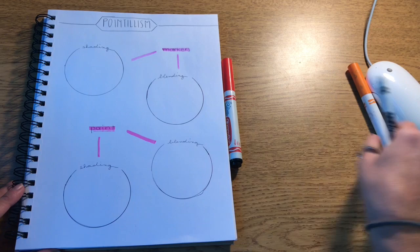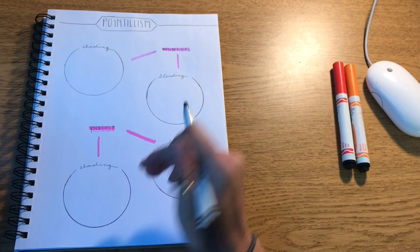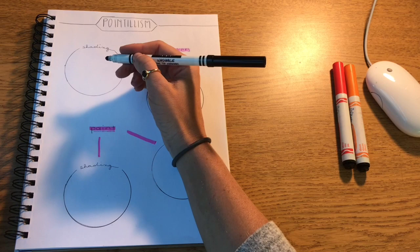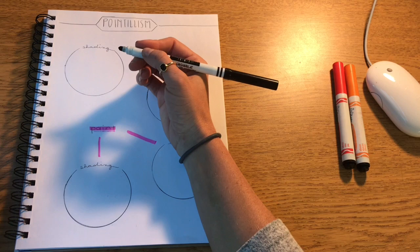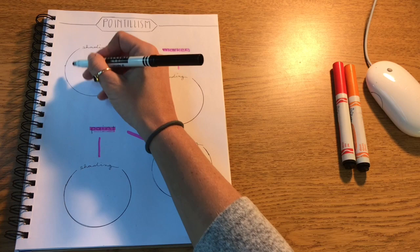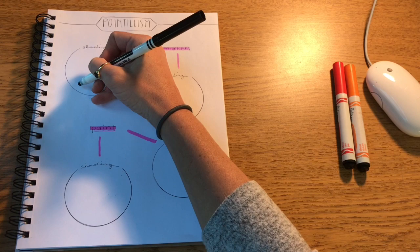So pointillism is kind of similar to cross hatching in that if you want your value scale to be darker, you need to do more dots closer together, and if you want it to be lighter, you do less dots farther apart. So for my shading circle I'm going to make the left side of it darker and the right side of it lighter.